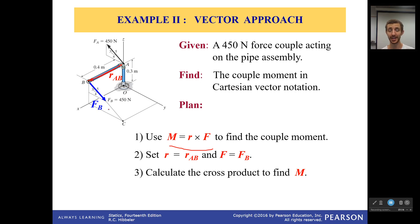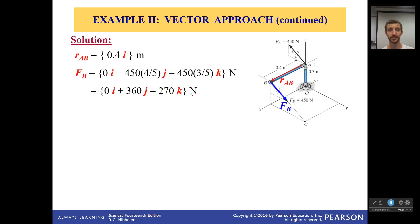So r cross F. And this will make it around this, a counter clockwise couple moment. Now r is fairly simple. It's just going directly down the x-axis. So we have the distance, which is 0.4 meters, in the i direction.